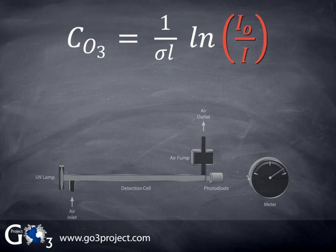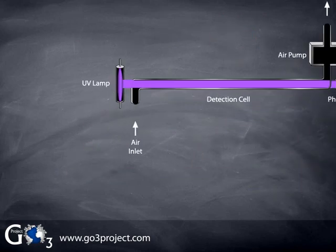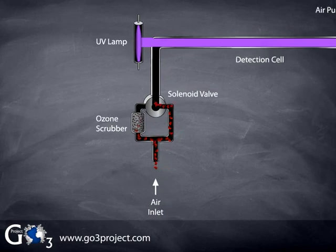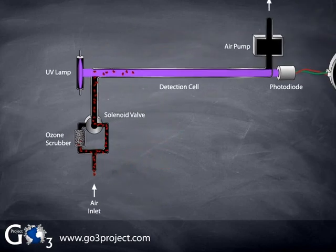So in our instrument, we need a way to alternately measure I and I0. This can be done by using an ozone scrubber to remove ozone and a solenoid valve to alternately switch the air flow between going through the ozone scrubber or bypassing it. The ozone scrubber is made of a material such as hopcolite that destroys the ozone molecules by converting them into ordinary oxygen molecules. A solenoid valve uses an electromagnet to repeatedly switch the flow path between a position where ozone passes through the ozone scrubber and a position where ozone bypasses the ozone scrubber.